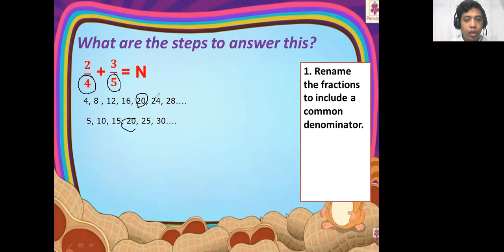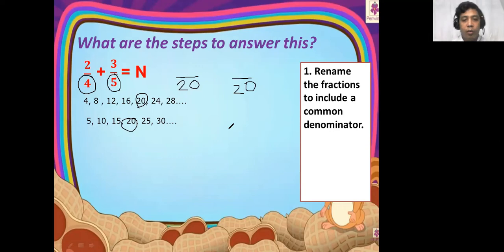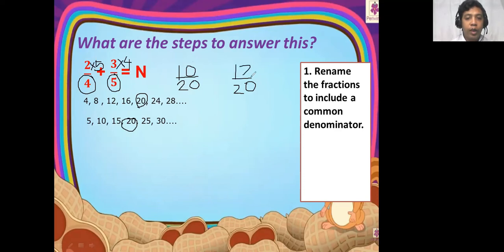Let's use 20 as their denominator. Twenty is the denominator of the first fraction and twenty is the denominator of the other fraction. How about the numerators? Divide twenty by four — the answer is five — and multiply it by two. Two times five equals ten. And twenty divided by five is four, multiply it by three — three times four equals twelve. Then, add.